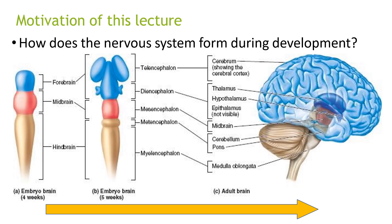So the purpose of this section is to find out how the nervous system forms during development. You can see from the embryo brain at four weeks to five weeks to the adult brain. Initially you have the forebrain, midbrain, and hindbrain. Then you have the telencephalon, the diencephalon, the mesencephalon, and the myelencephalon.